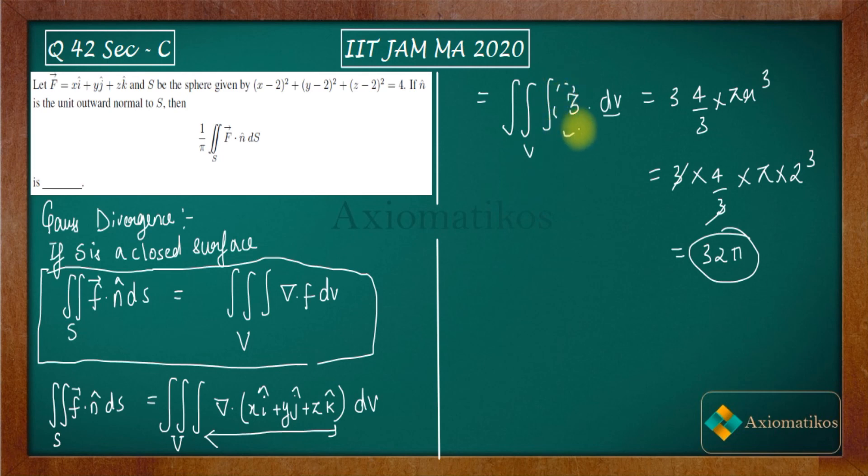Because this three is a constant number, it will come out of the integral. And the triple integral dV becomes the volume of the sphere, which is given to us. And volume of the sphere, we already know from our class seventh, eighth, ninth.